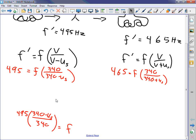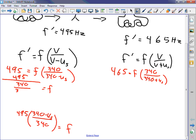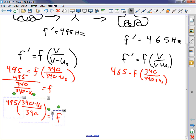This right here came from this idea. I divide both sides by 340. So I got f equals 495 over 340 minus u sub s. And whenever you divide by a fraction, you are doing the same thing as multiplying by the inverse. So take the inverse of this guy and multiply.